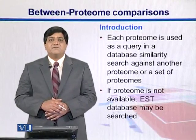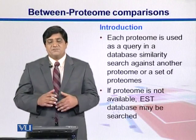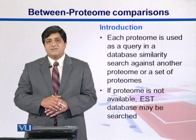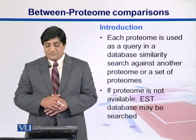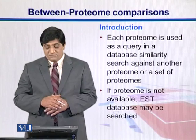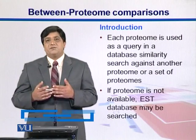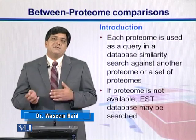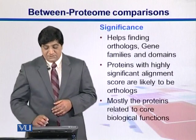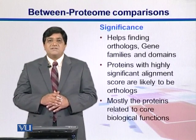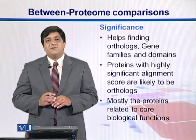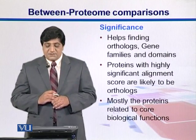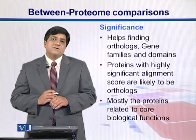In proteome comparisons, we compare proteomes from different organisms to find genes which are similar between those organisms — we call them orthologous genes. We take the proteome as a query and do a database similarity search against another proteome, or a whole database with a set of proteomes. If a proteome is not available, we can search against ESTs — expressed sequence tags. This helps us find orthologous genes, gene families, and domains between different organisms.